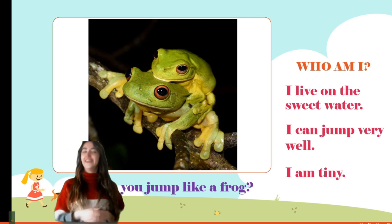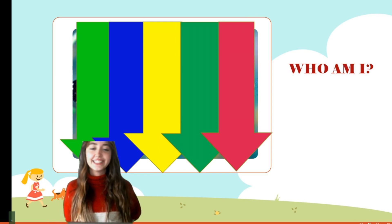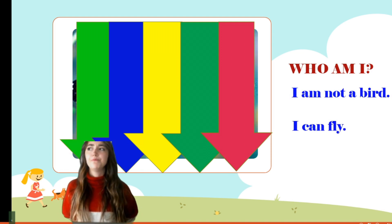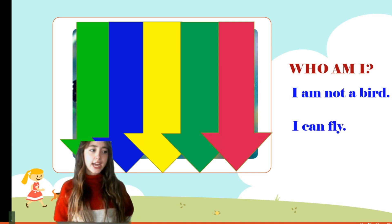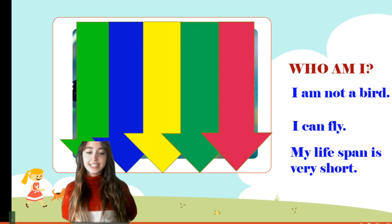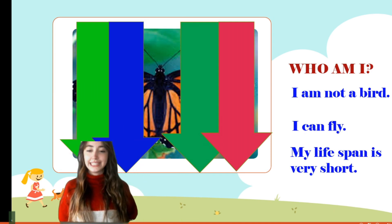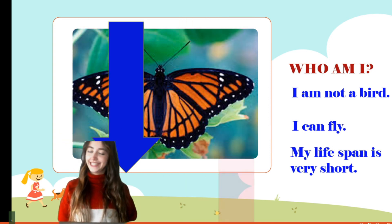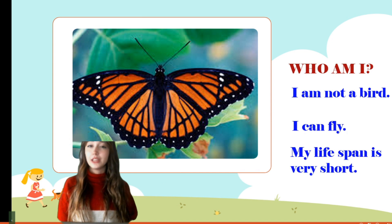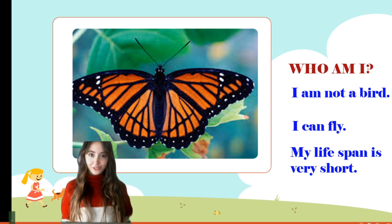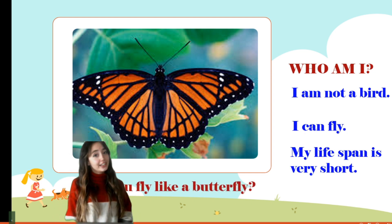Let's look at the next one. Who am I? I am not a bird but I can fly. Hmm, do we have an animal like that? And my lifespan is very short — it's sad to hear that. It's a butterfly! It is not a bird, but it is a butterfly. Can you fly like one?